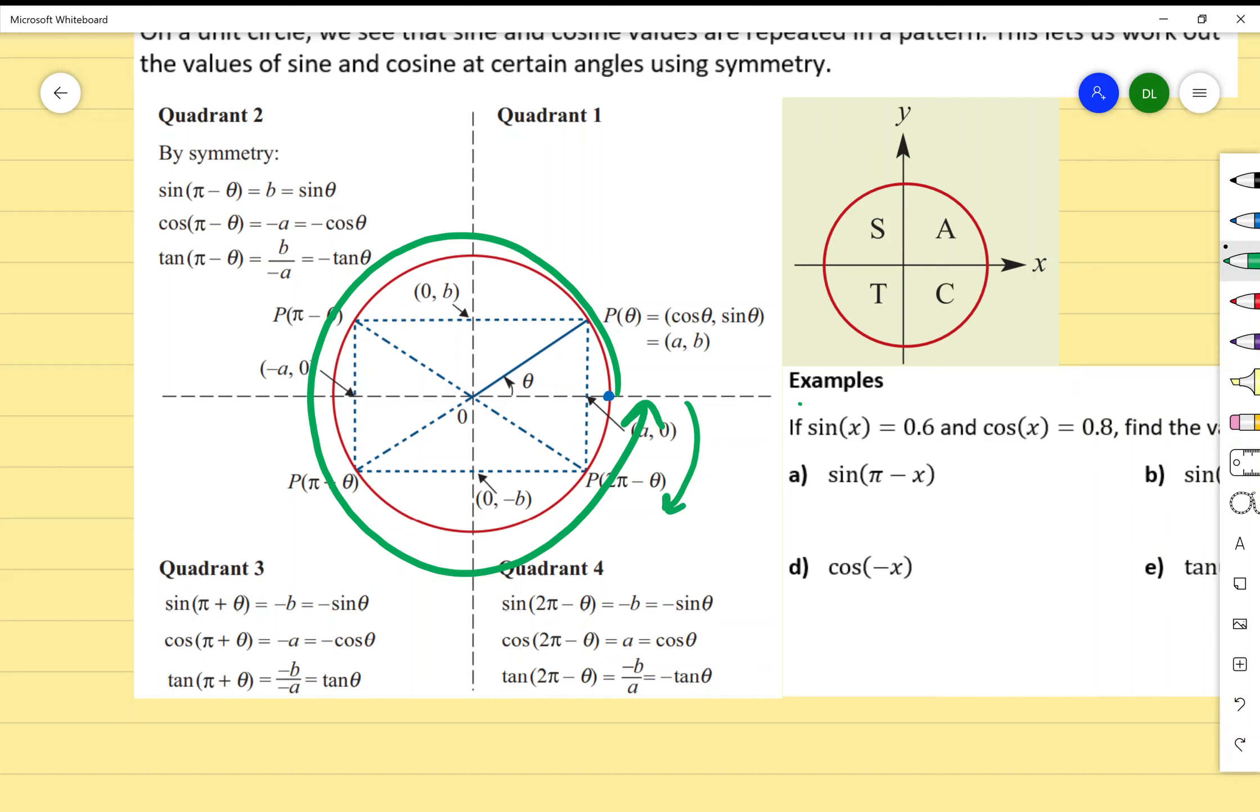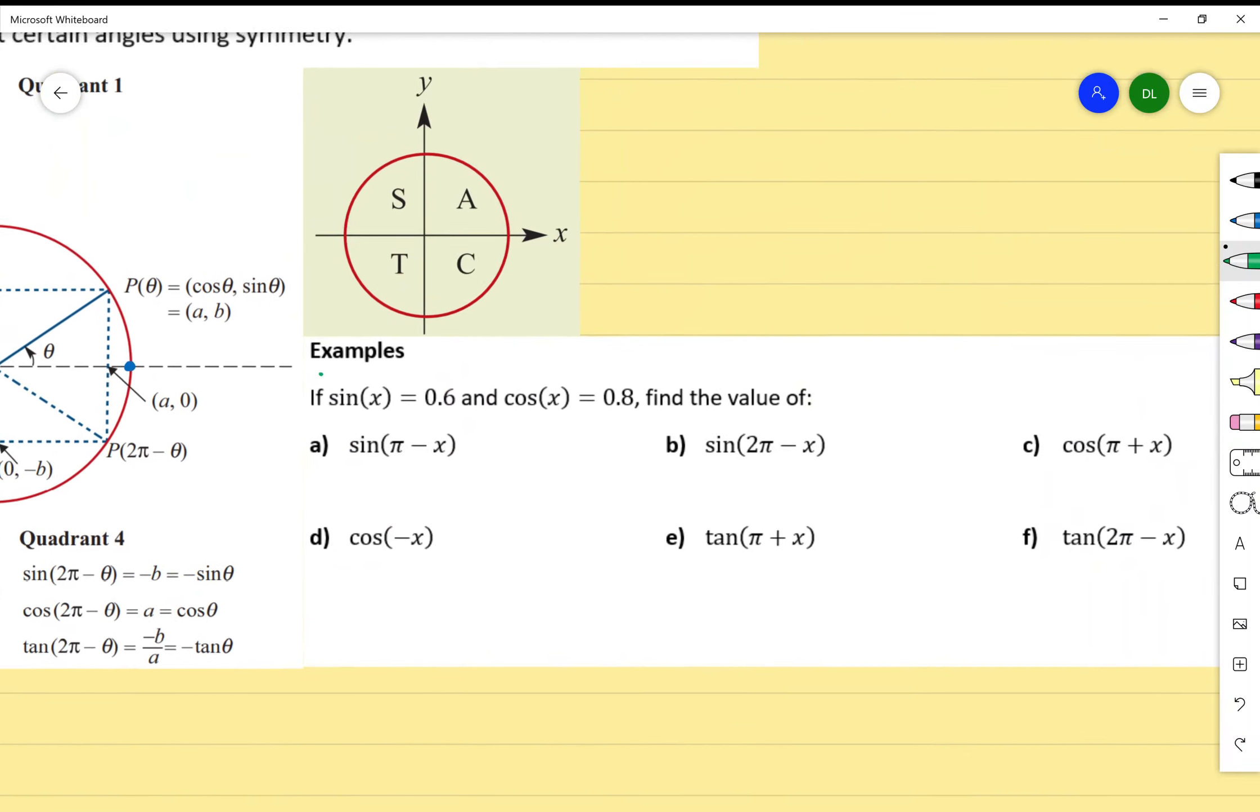So 2 pi minus theta, which is what we have over here. The rule—the golden rule—is we always start from the horizontal line and then work our way with that angle. That's in principle what the unit circle is in terms of symmetrical properties.